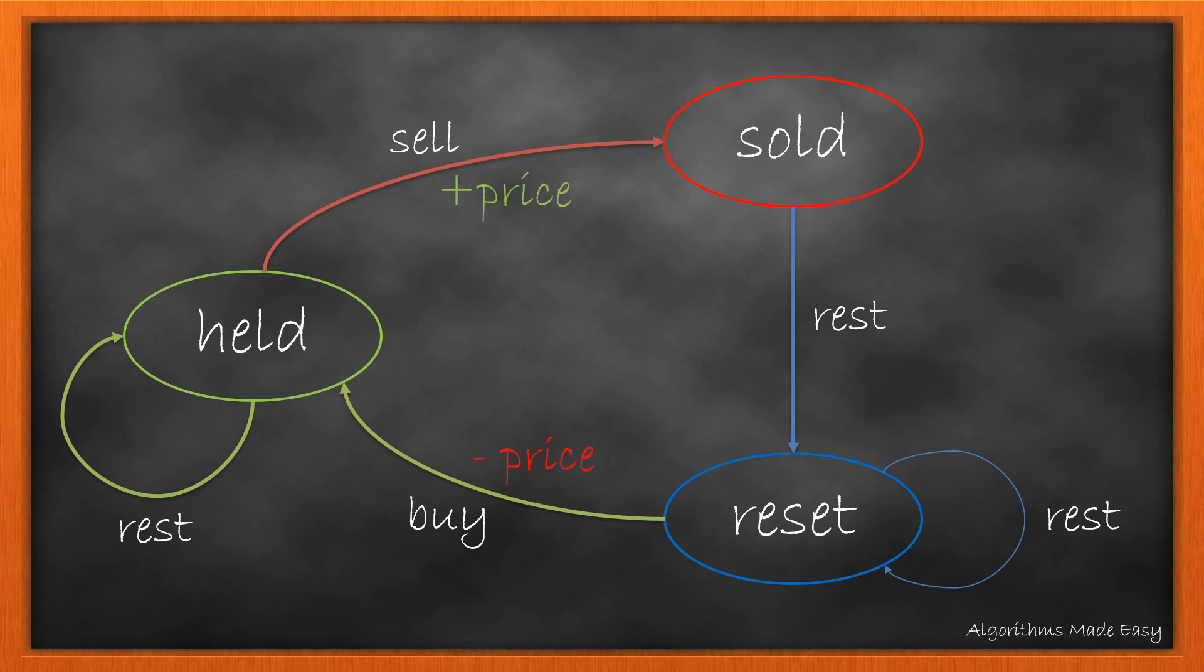Sell and buy operation is nothing but the movement of stock in and out of the total profit. When he sells, the prices add to profit, and when he buys, the prices decrease from the profit.